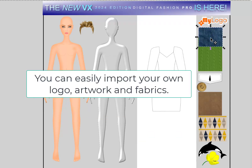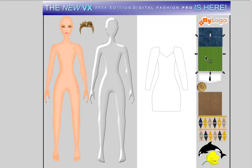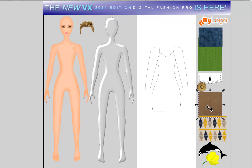This is a denim fabric, this is a knit fabric, this is a pocket flap, this is a button, this is a suede fabric, this is a print, this is an image from our animal kingdom, and here's a flower template that's from the mega vector art gallery.